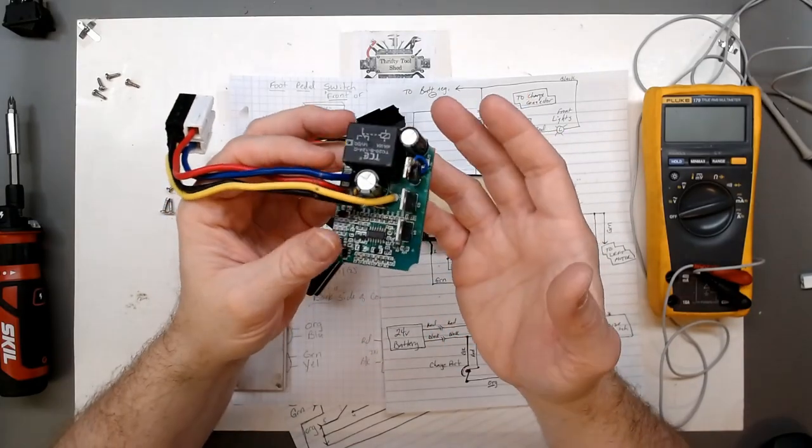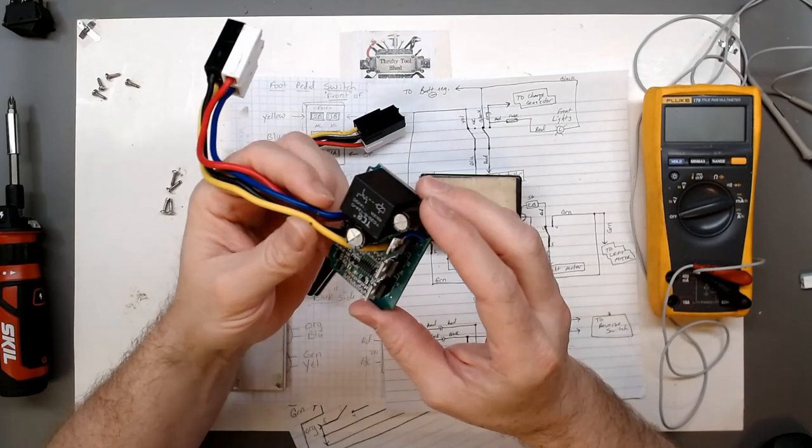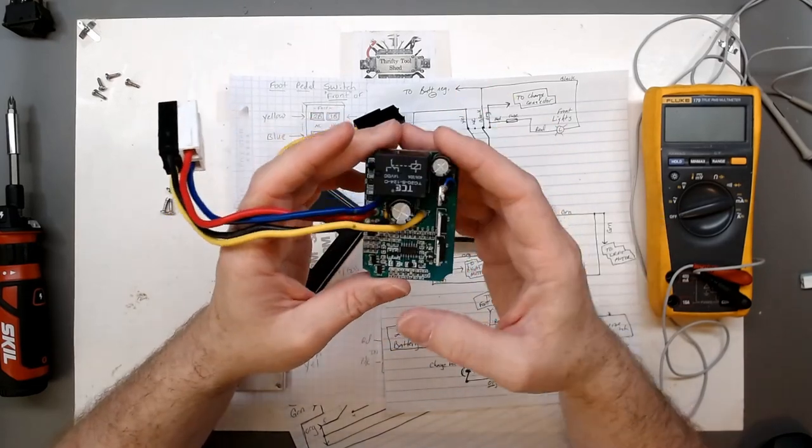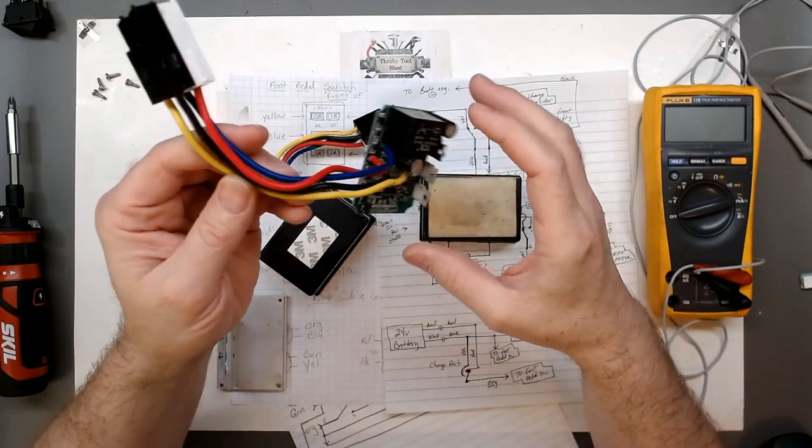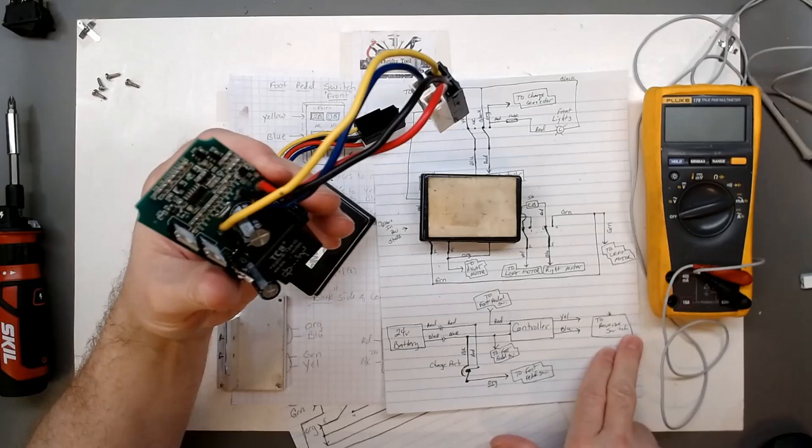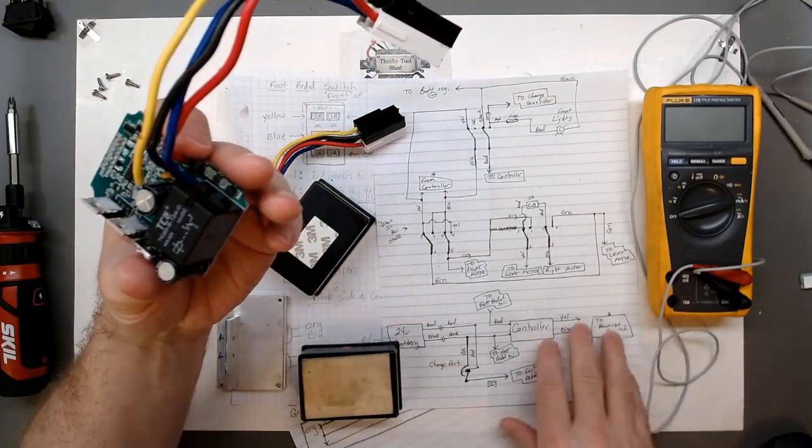So what this thing does is it takes the 24 volts in and simply directs it out to the load, to the motors, through the switches and all that, as we'll see from the controllers. What I drew here in this preliminary drawing.